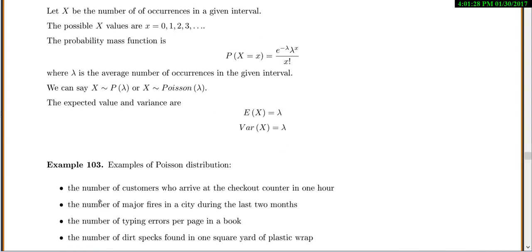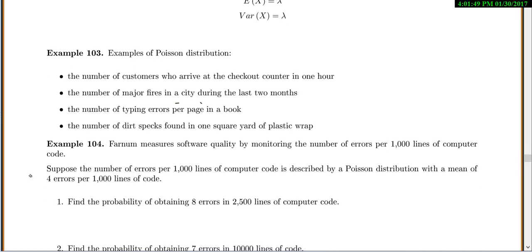So some examples might be like the number of customers who arrive at the checkout counter in one hour, or the number of major fires in a city during the last two months, number of typing errors per page in a book, the number of dirt specks found in one square yard of plastic wrap. So everything is kind of a set interval.